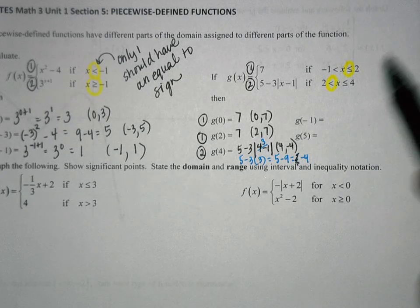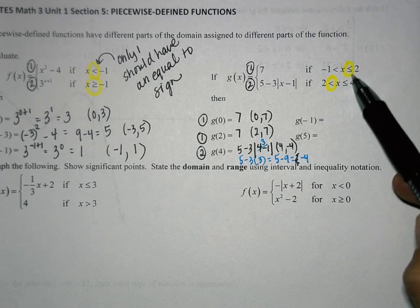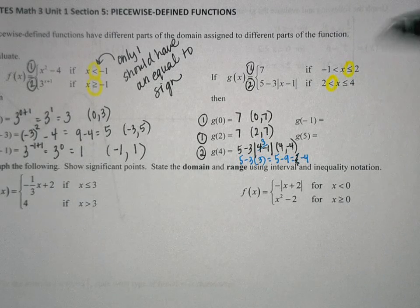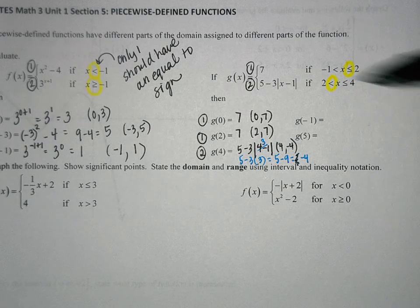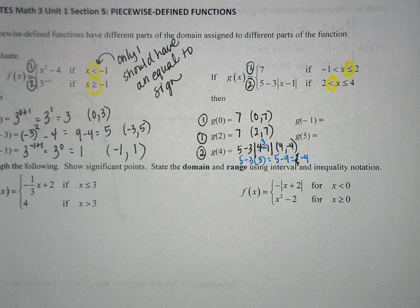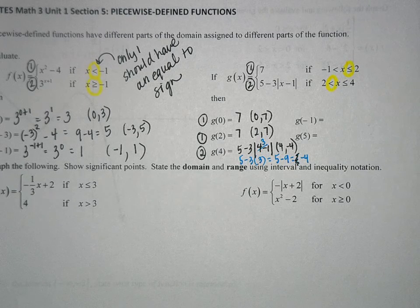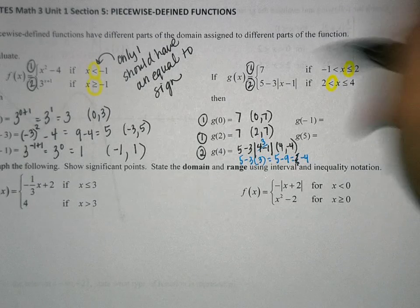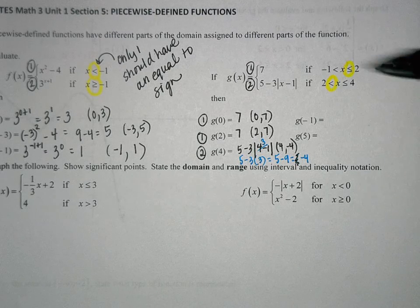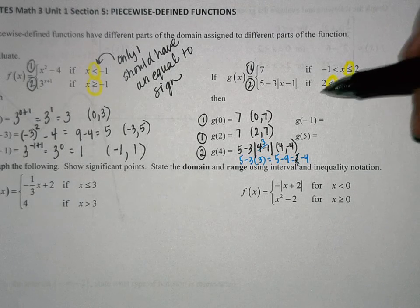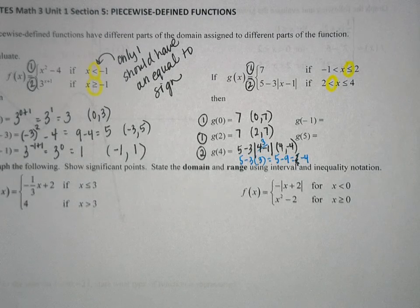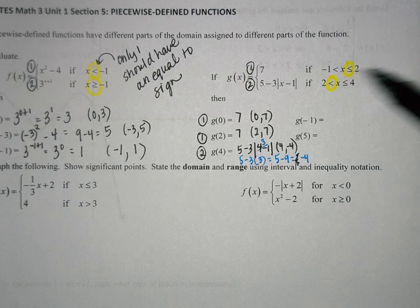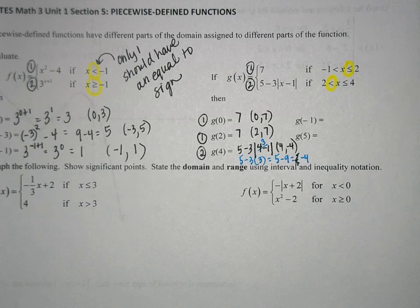I just wanted you to notice how one of them has a less than or equal to, and one of them has a less than. See how these both have a value of 2? Only one of them can have the equal to sign. The range covers values from negative 1 to 2, and from 2 to 4.